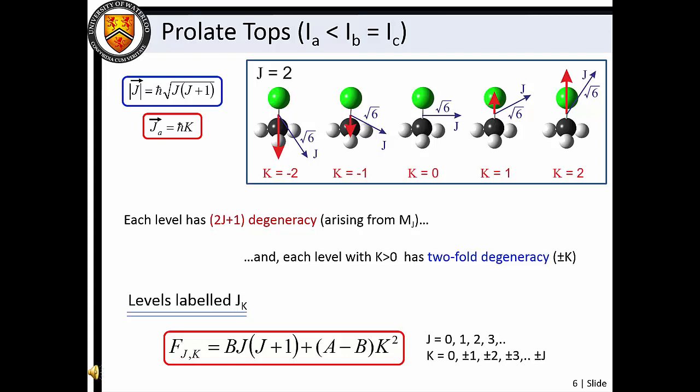This two-fold degeneracy is apparent if we compare the J=2, K=2 motion with the J=2, K=-2 motion for chloromethane. In both cases, rotation of the molecule is entirely about the symmetry axis. Thus, both motions have the same atoms moving about the same body-fixed point in space, with the same moment of inertia and therefore the same rotational energy. In other words, for each clockwise rotation about the symmetry axis, there is an equivalent counterclockwise rotation.